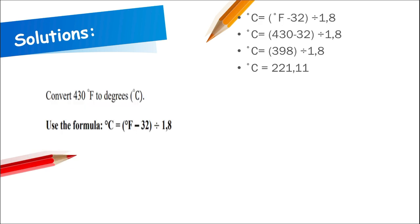For the temperature conversion question — converting from Fahrenheit to Celsius — it's so important to use BODMAS and remember your brackets. Substituting 430°F into the formula: first subtract 32 to get 398, then divide by 1.8, giving 221.11 degrees Celsius.